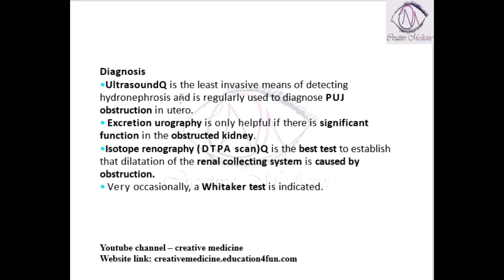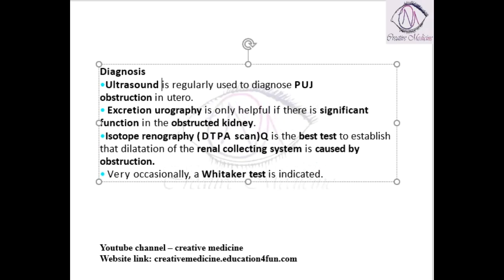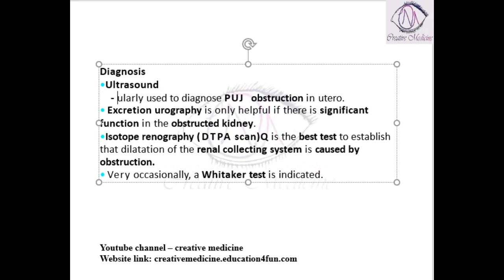Hydronephrosis can be diagnosed by, number one, ultrasonography. Ultrasonography can be used to diagnose hydronephrosis, and it can also be used to diagnose pelviureteric junction obstruction in utero.